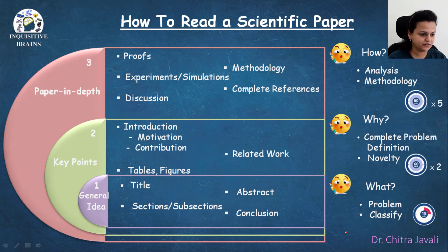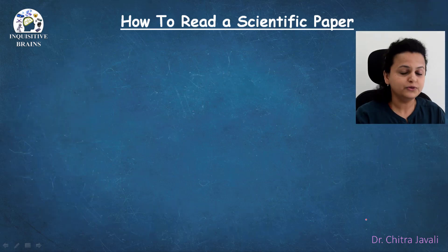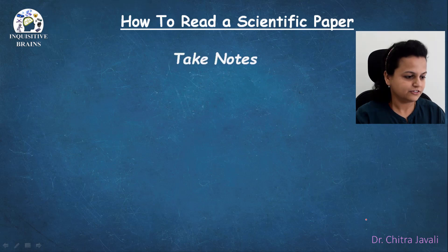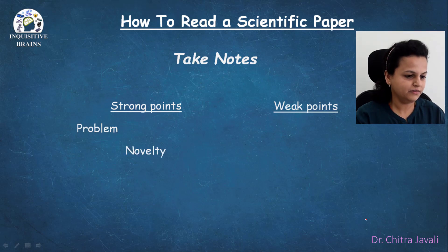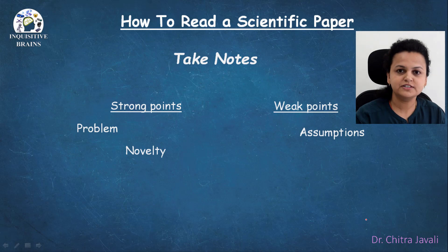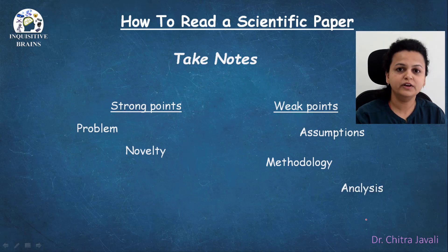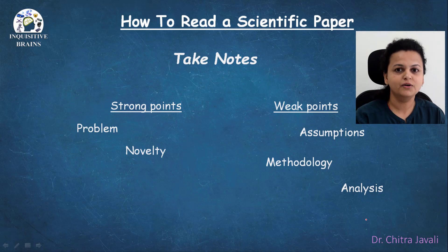Once you have gone through all three passes, you need to take notes. Jot down the strong points and the weak points. In the strong points, note down what problem the researchers are trying to solve and what is the novelty. In the weak points, you can state the assumptions — whether they are valid — the methodology and the analysis, and whether you can improve the approach or do it in a different manner. You need to take notes once you complete reading the paper, so that you do not have to re-read it again.